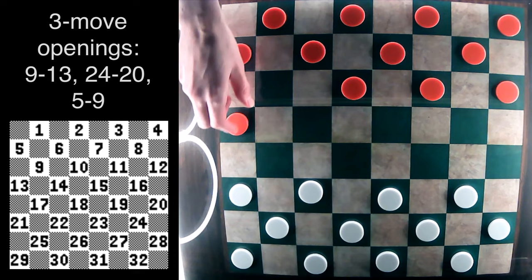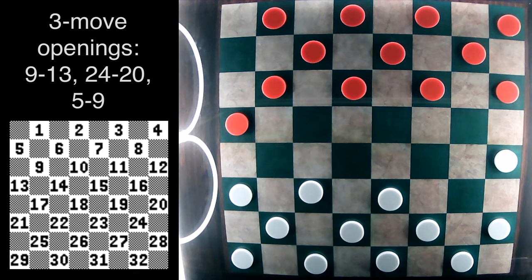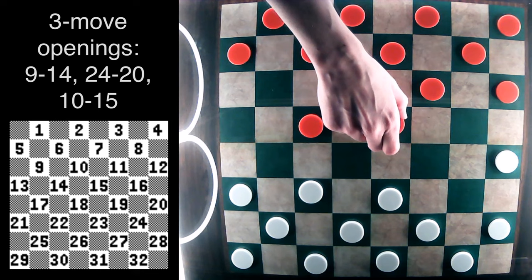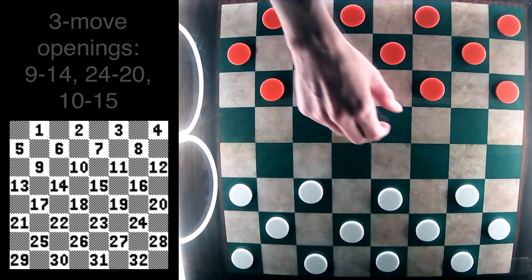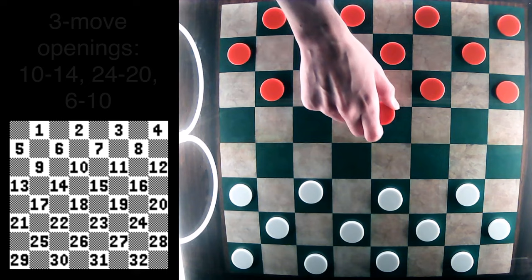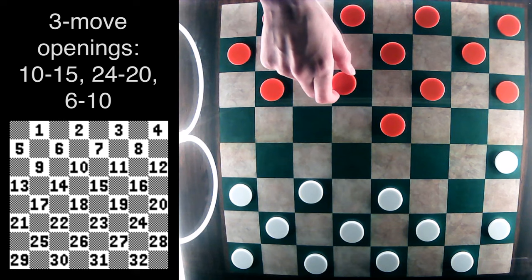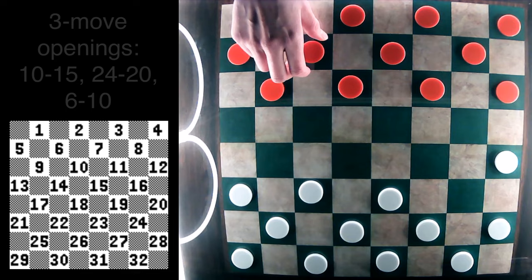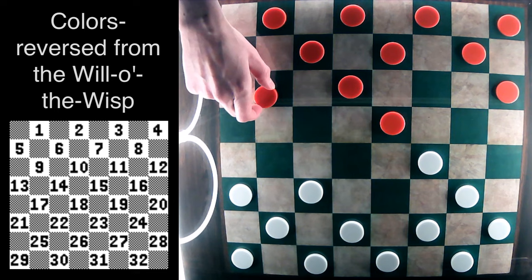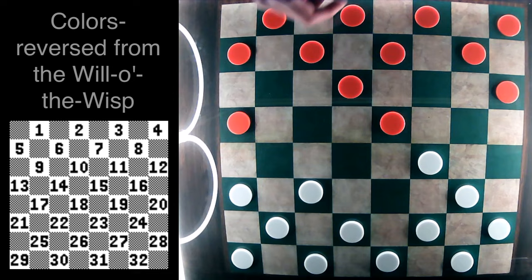But it also can arise in a number of three move openings. And to give some examples, we have 9-13, 24-20 and 5-9. We also have 9-14, 24-20 and 10-15. 10-14, 24-20 and 6-10, and 10-15, 24-20 and 6-10 just to name a few. And it also can arise from a colors reversed transposition in the will-o'-the-wisp opening of 11-15, 23-19 and 9-13, and I'll show this in more detail later.